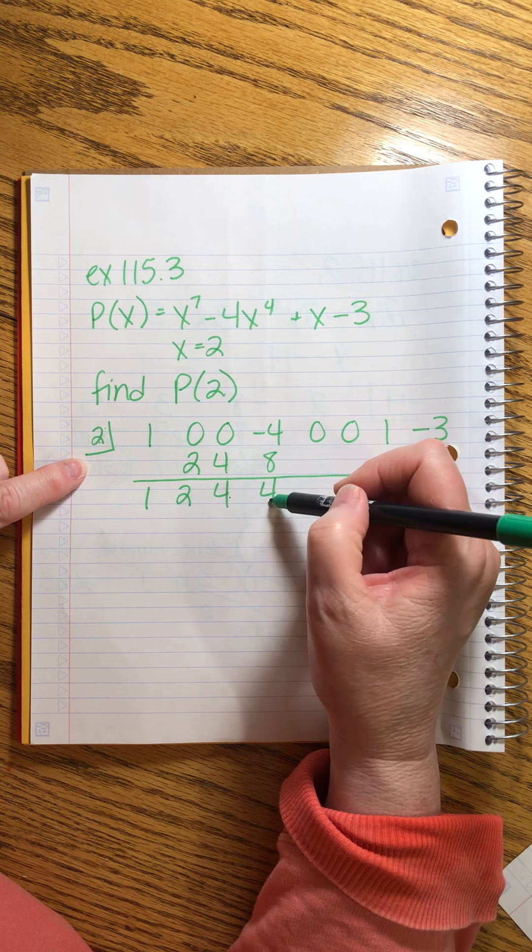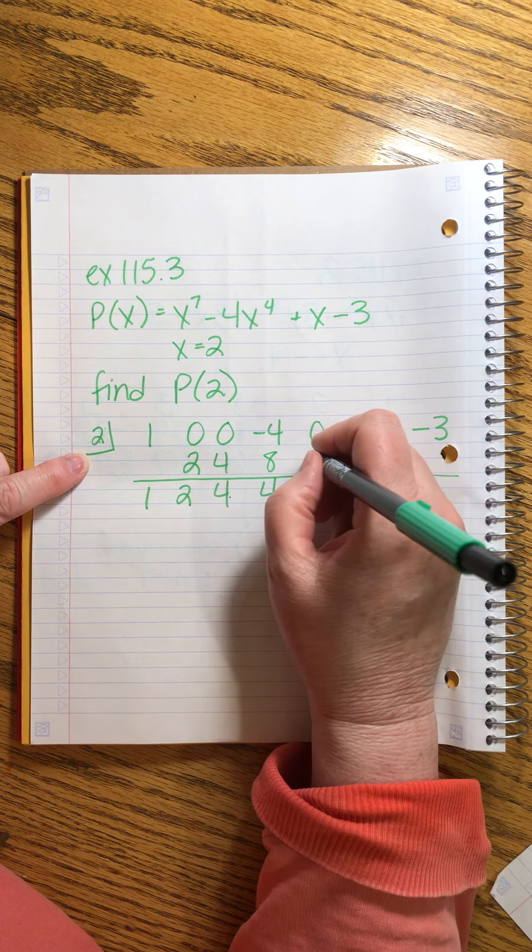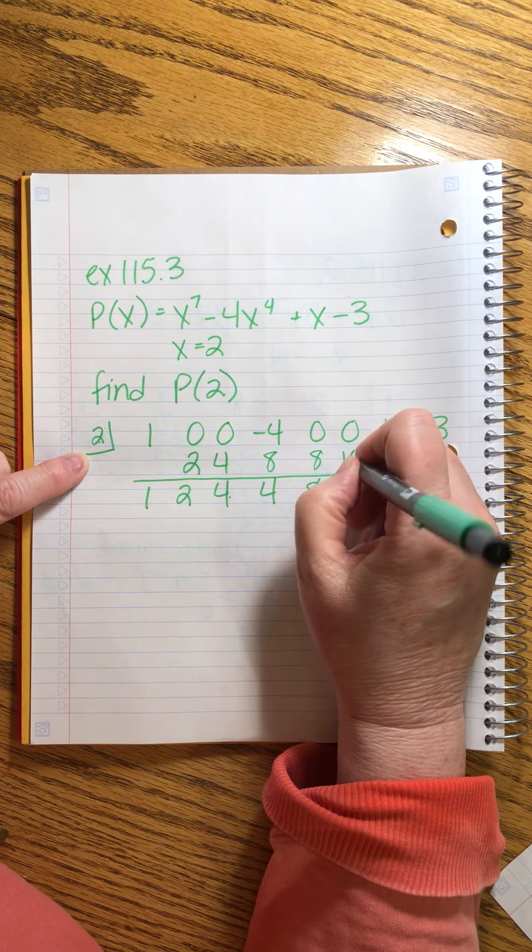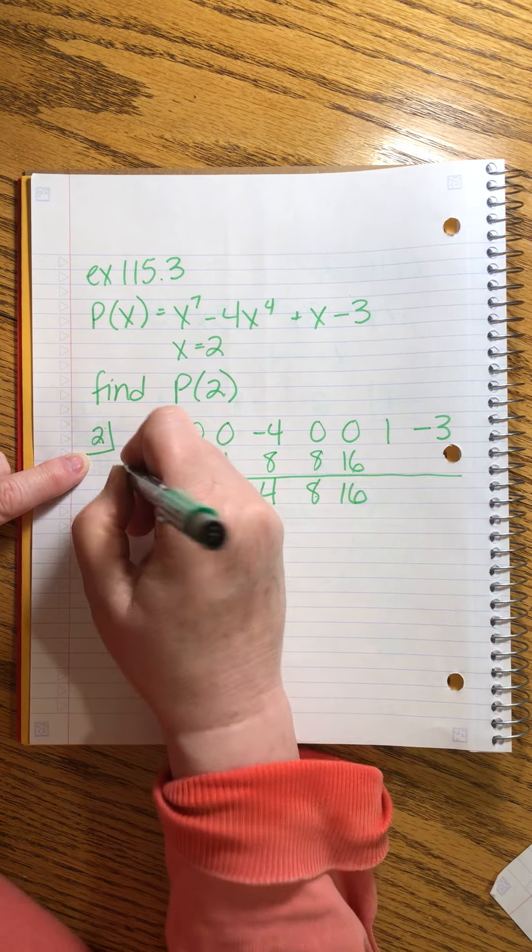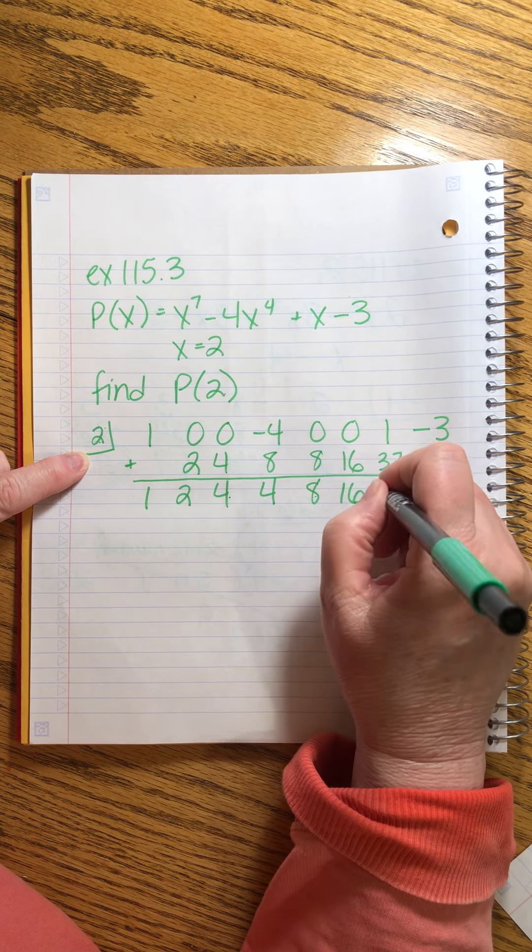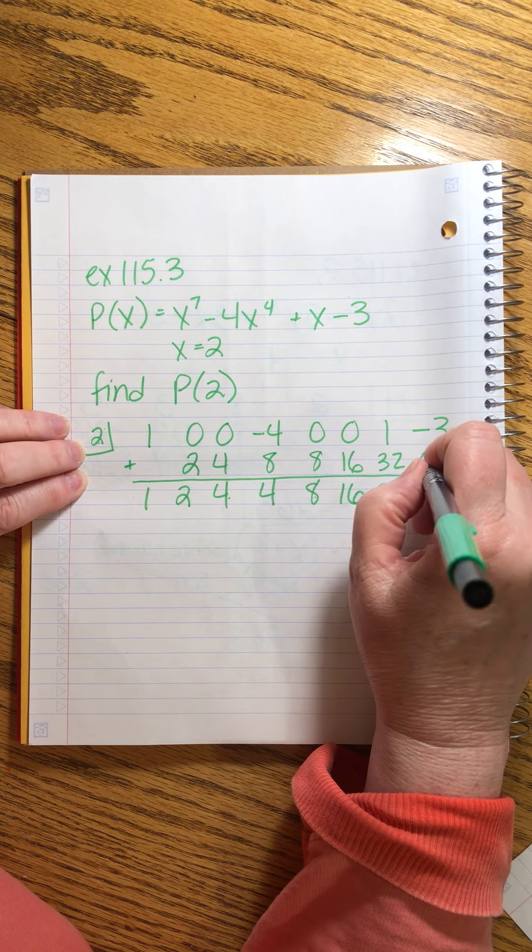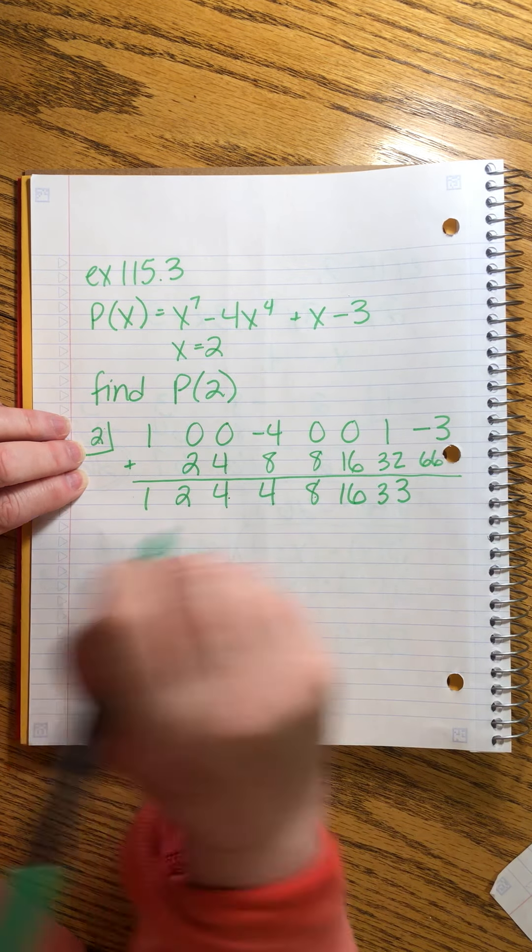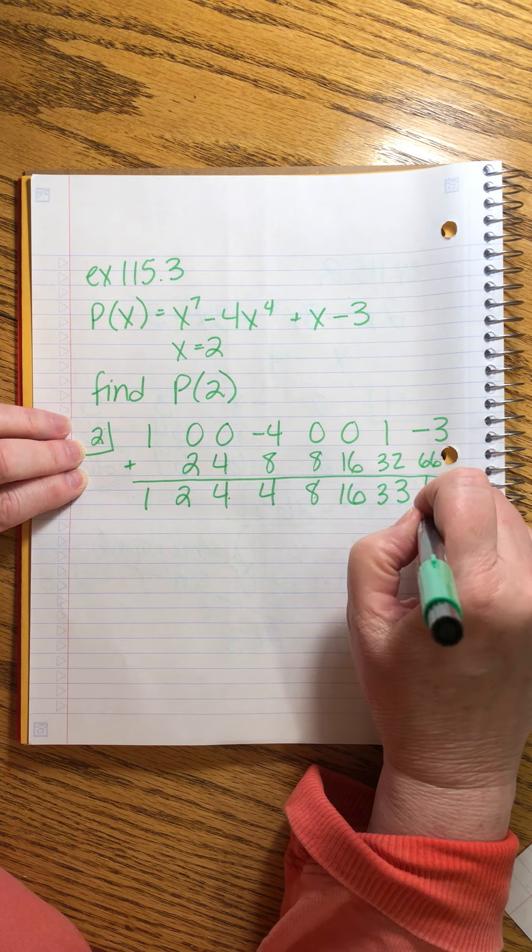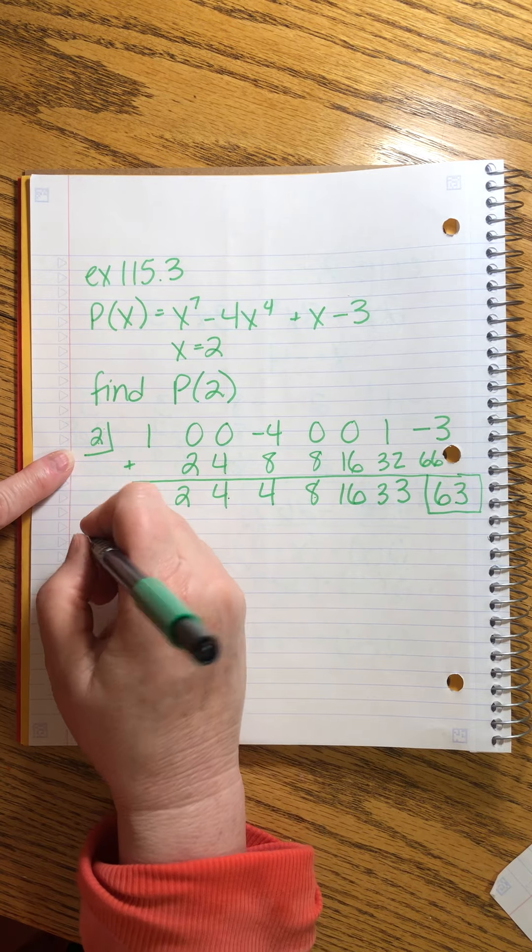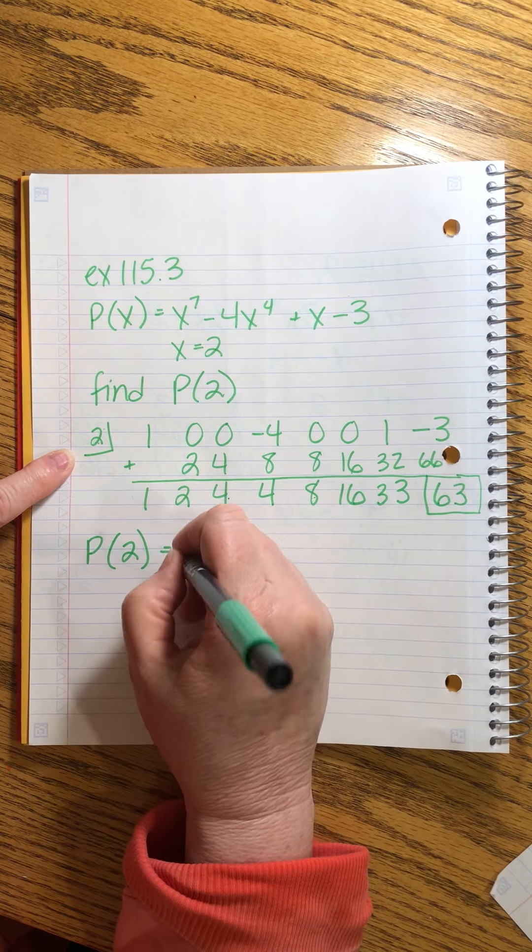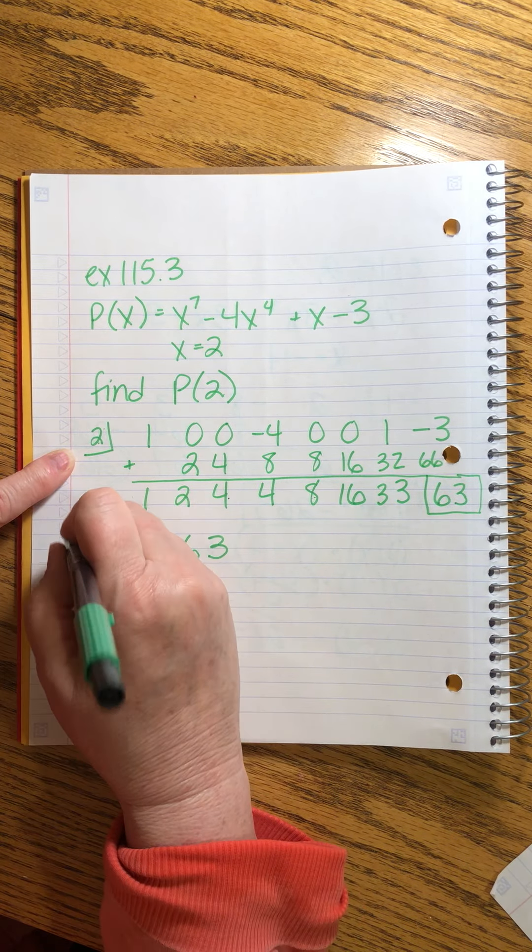What did I do? I said this was 4. I said this was 4. 2 times 4 is 8. Again, 2 times 8 is 16. And I'm adding, right, I'm always adding here. 2 times 16 is 32. I add, I get 33. And then this is 66. With negative 3, that means our remainder is 63. So what that tells us, using our remainder theorem, is that P(2) equals 63. And that's our final answer.